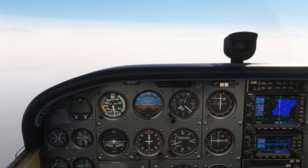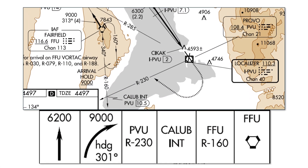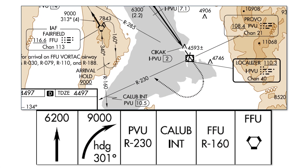We're on an ILS approach into Provo, Utah. The missed approach procedure has several steps to it. First, we make a straight out climb to 6200 feet. Then we make a right turn to 301 degrees, staying in the climb to 9000. From the 301 heading, we're going to intercept the 230 radial off the Provo VOR and fly that to the Caleb intersection, which is on the 160 radial from the Fairfield VOR, which we'll then fly inbound to and hold over.